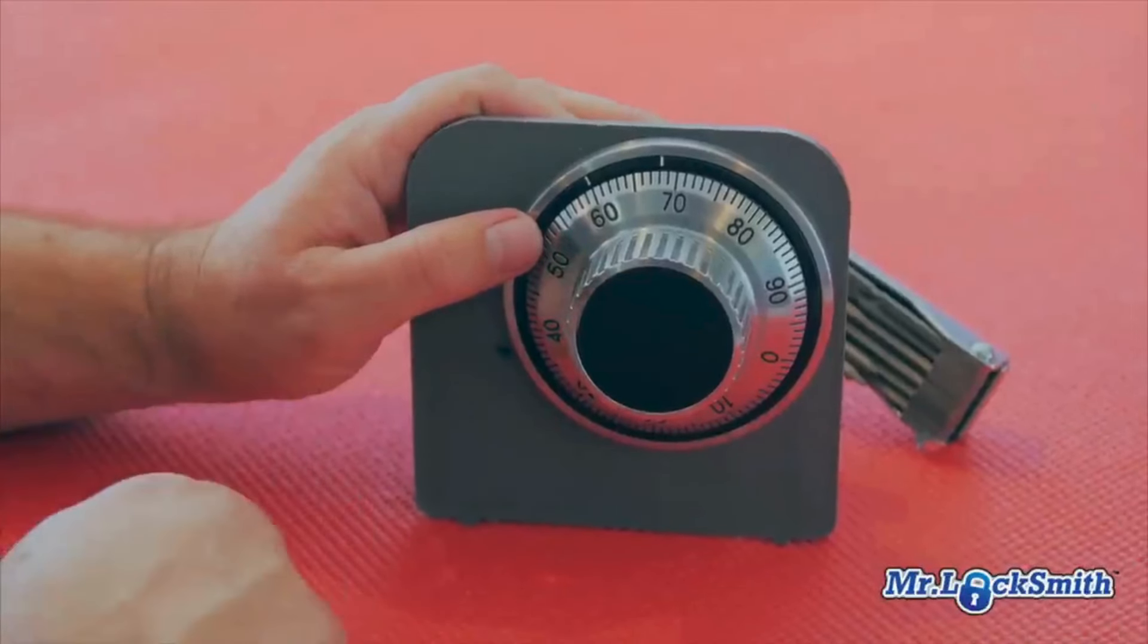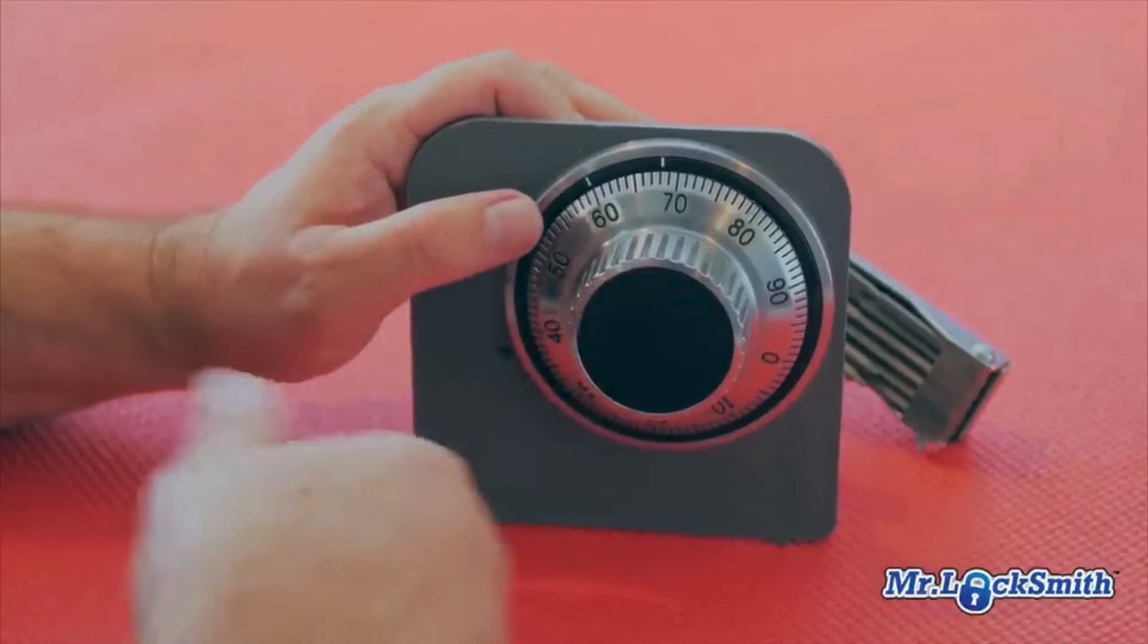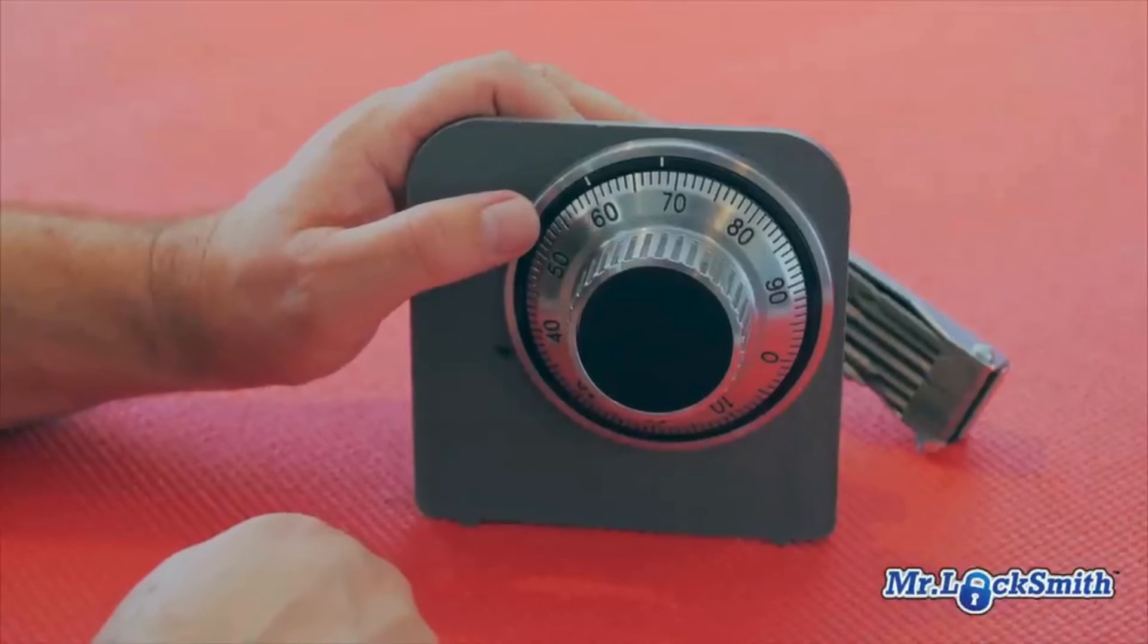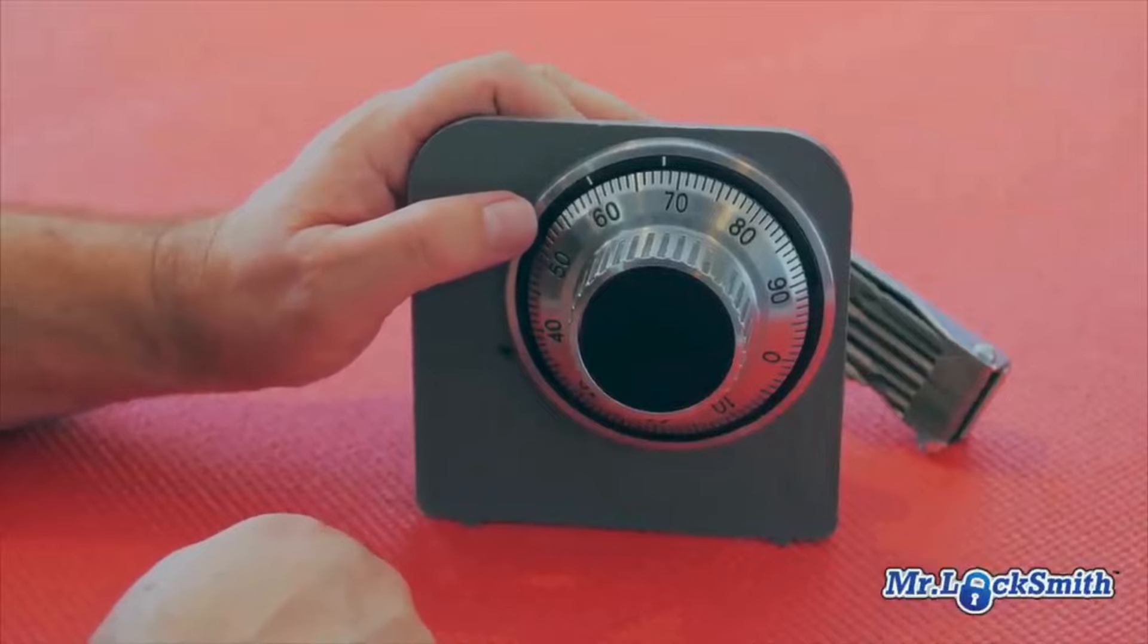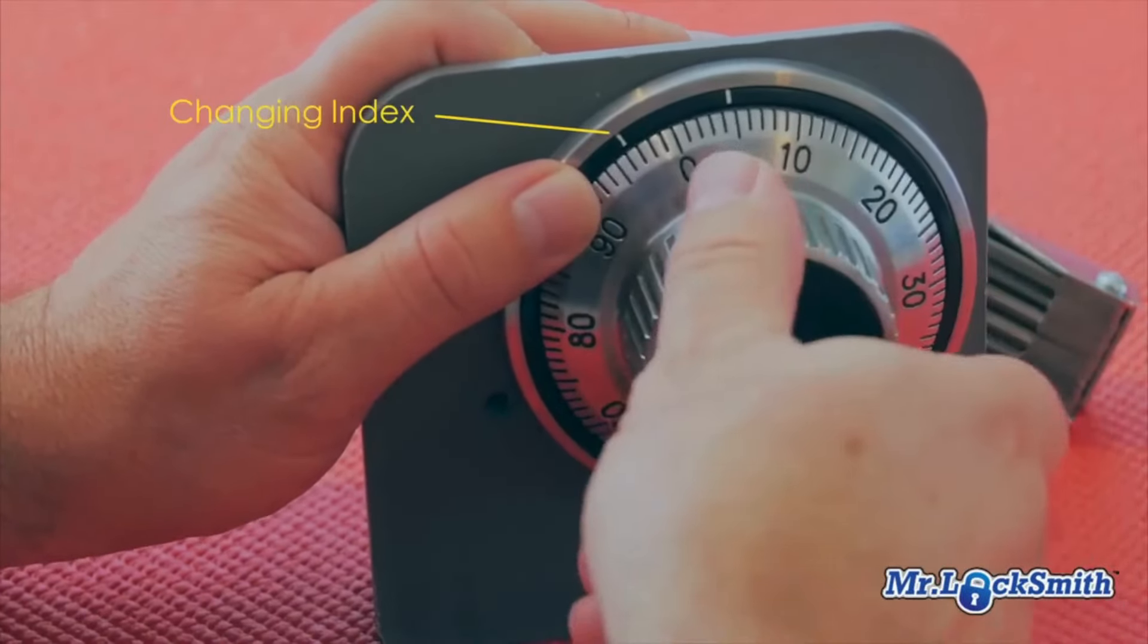Now we're going to change the combination to new numbers. We've got the change key in - it allows the wheels to turn freely so we can change it. We're going to go with probably the most popular number out there: 36-24-36.